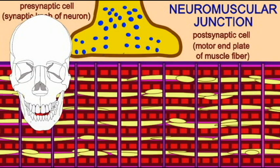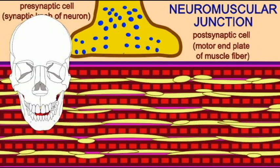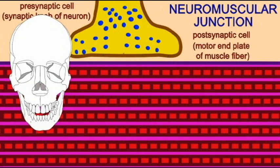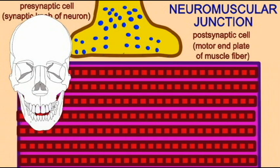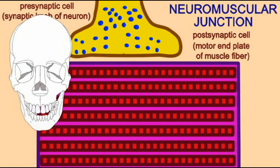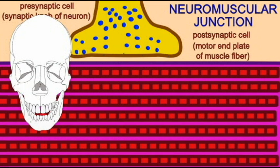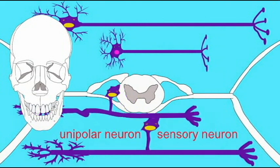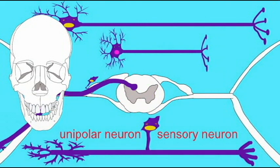After the most primitive bilateran worms, more advanced bilateran worms evolved more advanced nervous systems which included larger brains, longitudinal nerve cords stretching the length of the body, and more prominent eyes.